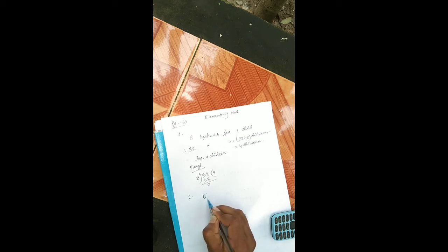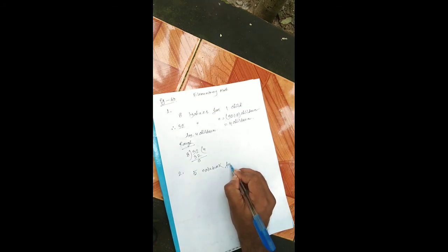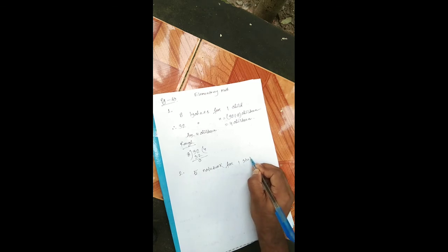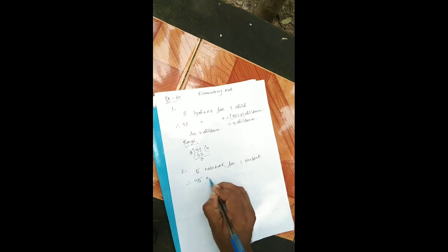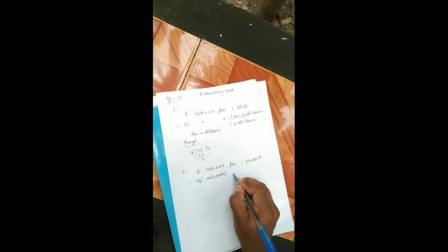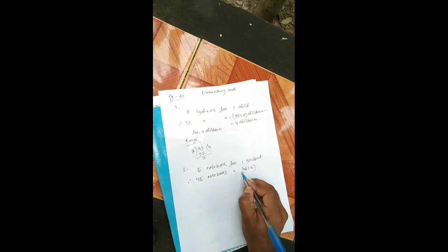There are 45 notebooks and each student gets 5 notebooks. Now write down, same as question one: 5 notebooks for one student. Therefore, 45 notebooks divided by 5 gives the number of students.